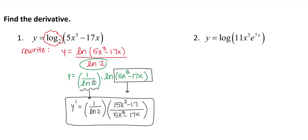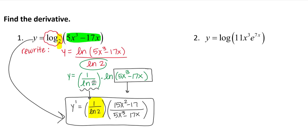When you look back at this answer, it is possible to go right from y equals log base 2 to the derivative. Whatever your base is, it becomes 1 over natural log of that base as a coefficient, and then it's just the derivative of the argument over itself. That first example mainly used the change of base, whereas the next one will use more algebraic log properties.